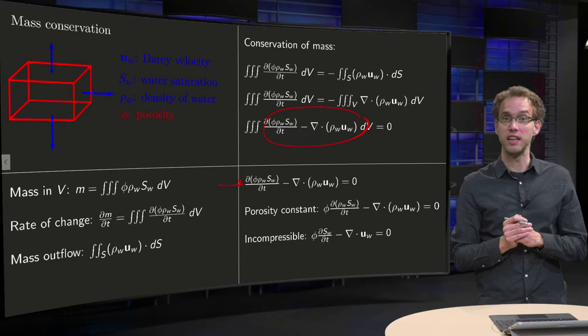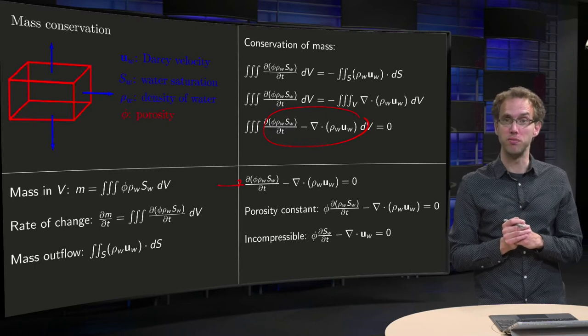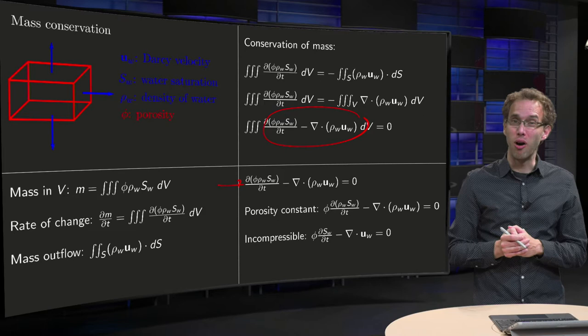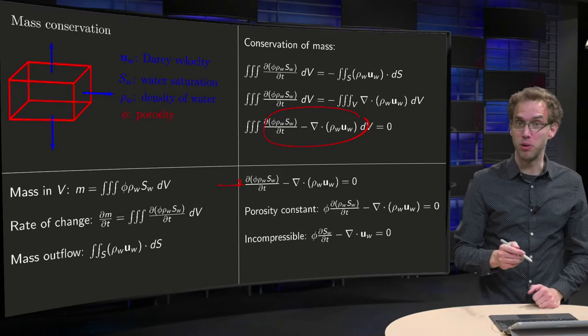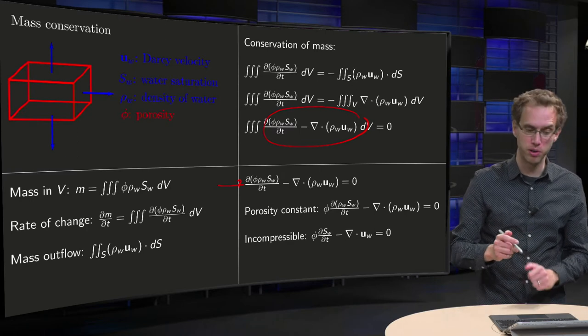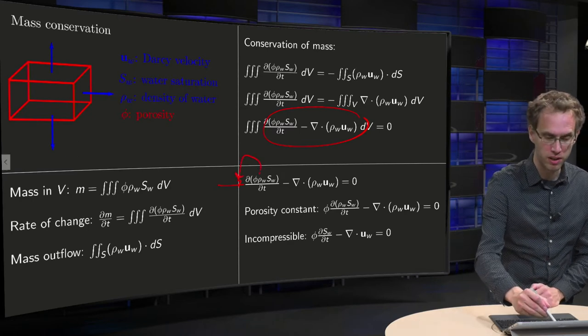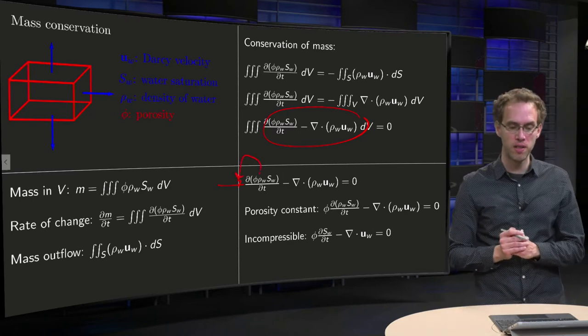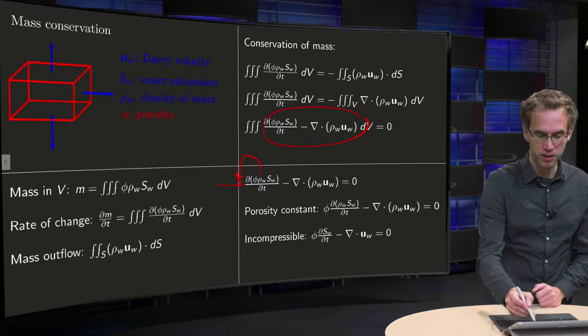That is the PDE that expresses our conservation of mass in general form. Now, often your porosity will be constant, unless you are deforming your rock, but for many applications your porosity is constant. So you can take it out, so it goes in front. Then we are in this form, that is how derivations often start.